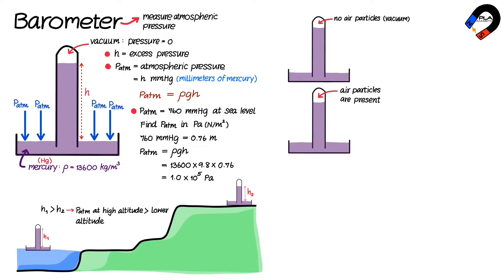For example, if we use a barometer that has air present at the top of the tube to measure atmospheric pressure at sea level, its reading will be less than 760 millimeters of mercury. If we change from mercury to another liquid with a lower density, the height h of the liquid column increases because the liquid is lighter than mercury.